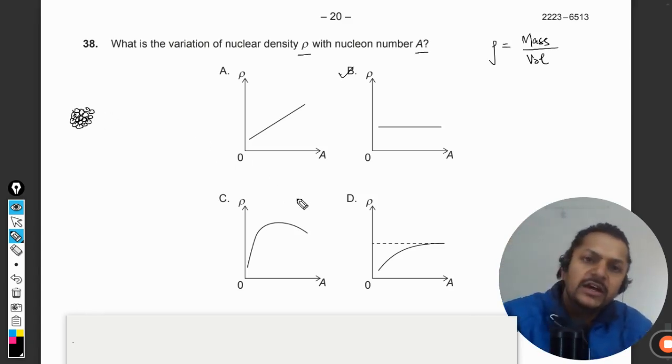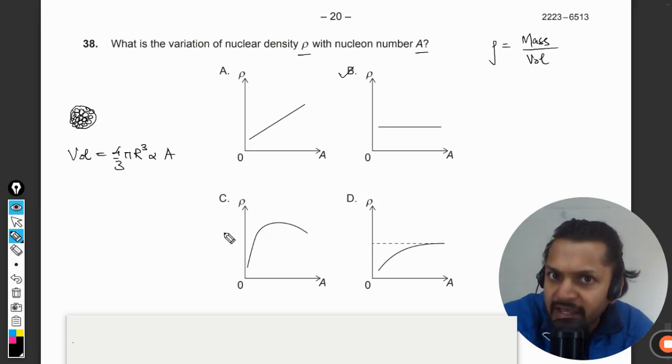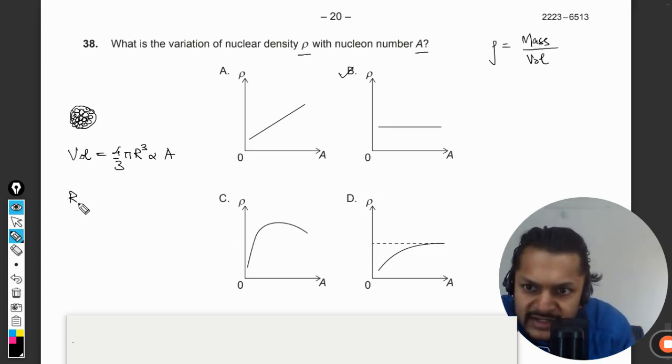Mass number means the total number of nucleons which are present inside of it. Clearly, the volume of this sphere or nucleus will be 4/3 π r³. This will be directly proportional to the mass number A.